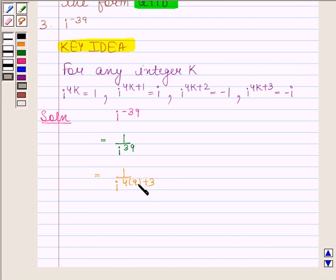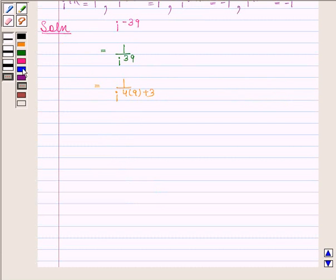Now, this is of the form iota raised to the power 4k plus 3, and this is equal to minus iota. So this expression is equal to 1 upon minus iota.